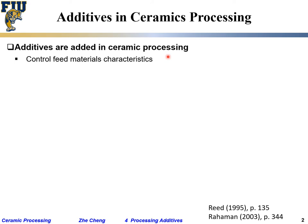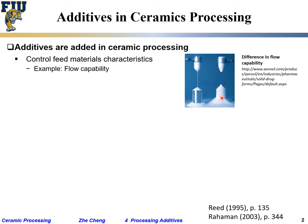One purpose is to control feed material characteristics, for example flow capability. Here are two examples — these are the same ceramic powder, but in one case the powder can flow continuously, while in the other, even upside down, the powder is not flowing. This is because the inter-particle van der Waals force is holding them together. You achieve different flow behaviors by adding different additives — sometimes we want them to flow like sand very easily, sometimes we do not want them to flow.